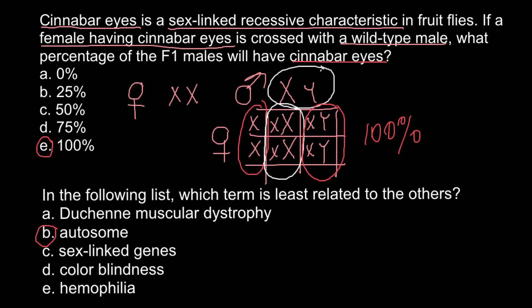We have only two sex chromosomes: one is the X chromosome and the other is the Y chromosome. All the rest we call autosomes — that is, all 22 other pairs of chromosomes are called autosomes. The 23rd pair we call sex chromosomes, and all the genes found on these chromosomes we call sex-linked genes.